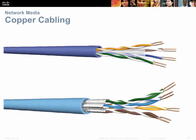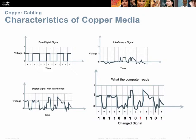Copper cabling: UTP, or unshielded twisted pair, has eight wires coiled into four pairs. STP, shielded twisted pair, has the same eight wires in four pairs, with each pair shielded by a foil shield. Copper is basically a giant antenna — the longer you run it, the more interference it accrues. That interference is added to the original digital signal, and the receiving computer must discern the original signal out of the added interference.